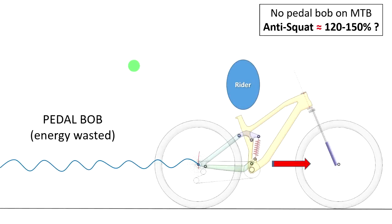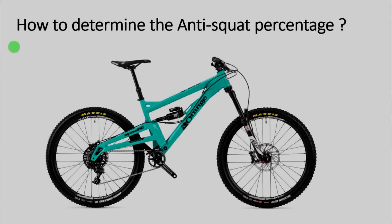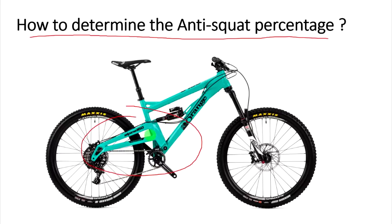Many people think that on mountain bikes the anti-squat needed to completely reduce pedal bob should be higher than 100%, perhaps around 150%. Keep in mind that when you have pedal bob, your energy is being wasted compressing the suspension. No pedal bob means no energy is being transferred to the suspension, giving you maximum efficiency. So how can you determine the anti-squat percentage for a given bike?